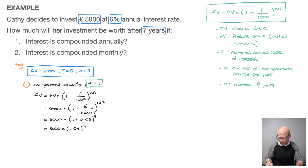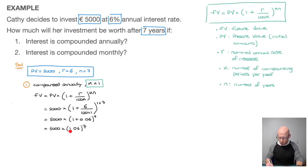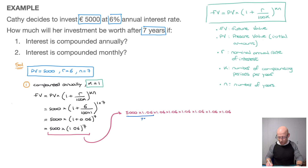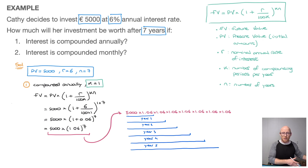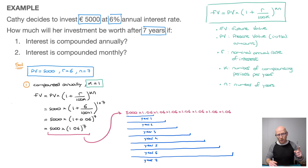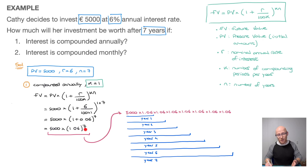If we multiply any number by 1.06, we're increasing it by 6%. Since 1.06 is raised to the power of 7, this corresponds to seven successive 6% increases. That makes sense: if interest is compounded annually at 6%, our investment grows by 6% each year, and since Kathy invested for seven years, we have seven consecutive 6% increases.